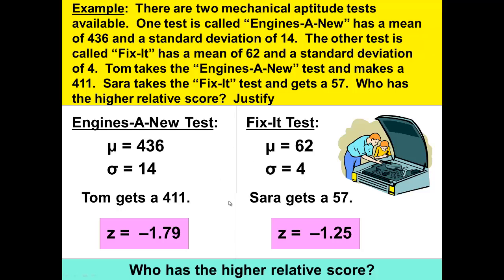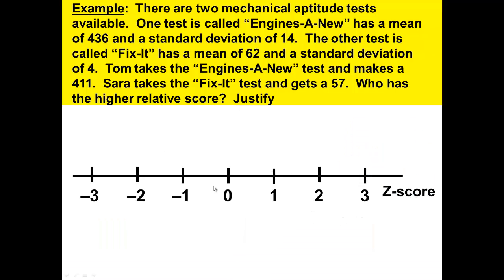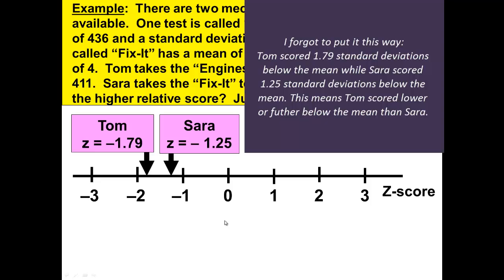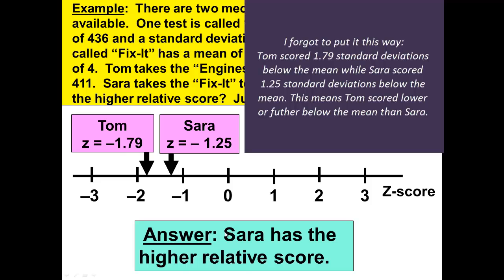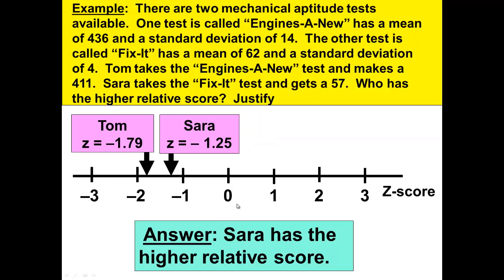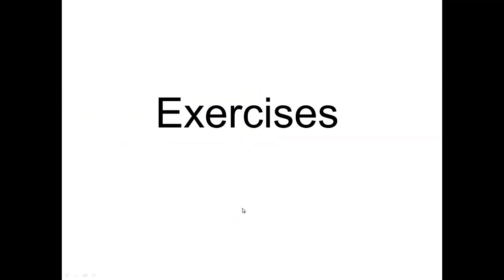Now that we know how many standard deviations each person scored, we can make our comparisons because we can compare the z-scores. Who has the higher relative score? We need to be careful with negative numbers. Here's the z-score number line — scores to the right are higher. Sarah has the higher relative score because her score of negative 1.25 is to the right of Tom's negative 1.79. Here are some exercises for you to try — pause if you wish to do these.